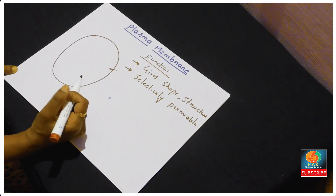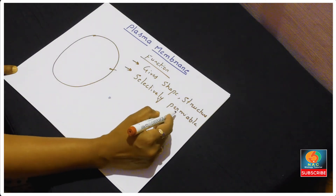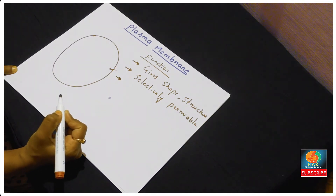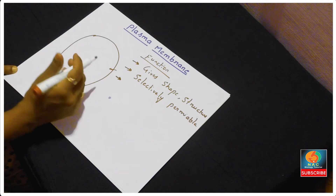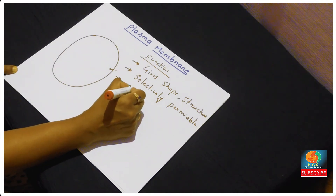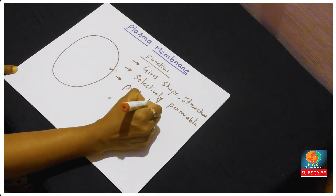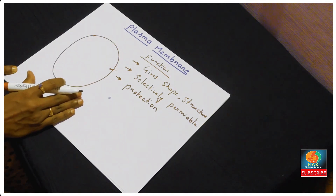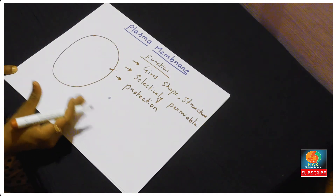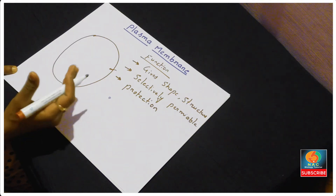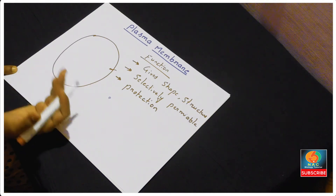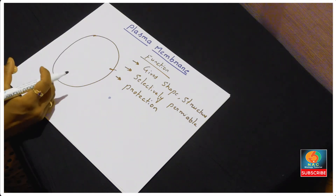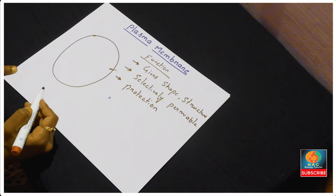Because it can select materials, it is called a selectively permeable membrane. Another function is that the plasma membrane acts like a protective layer, just like a wall of a house, giving protection to the cell. Along with that, many ions and substances can be actively transported, passively transported, or even moved through a process known as osmosis — all these functions take place with the help of the plasma membrane.